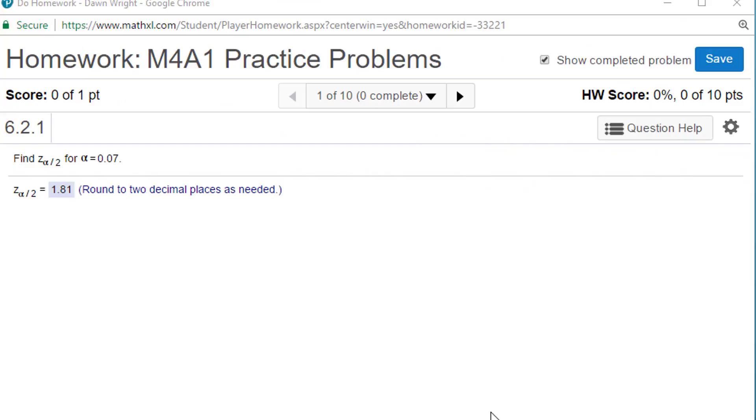Hi, this is Dr. Don. I had a question about some of the homework problems in Module 4, and the first one that I was asked about is really a very short problem. They say find Z of alpha over 2 for alpha of 0.07.